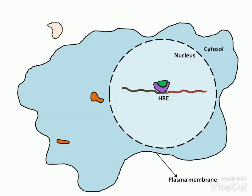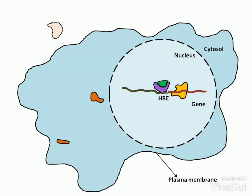The receptor attracts co-activator or co-repressor proteins. With them, REC regulates transcription of the adjacent gene or genes, increasing or decreasing the rate of transcription.